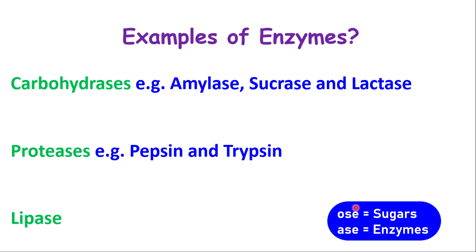Something we want you to note is that generally, if you see a word with the suffix -OSE, it is referring to sugar, such as sucrose, lactose, glucose, maltose. And once a word ends with the suffix -ASE, they are generally enzymes — for example, amylase, sucrase, protease, and lipase. So those are some examples.